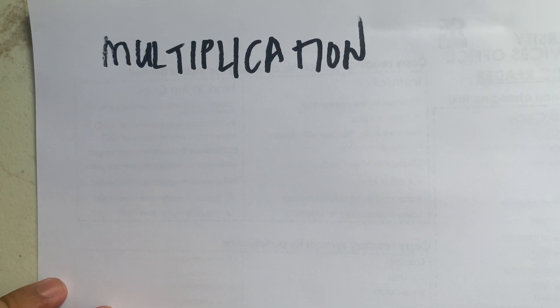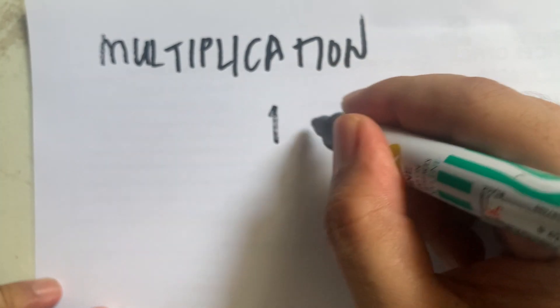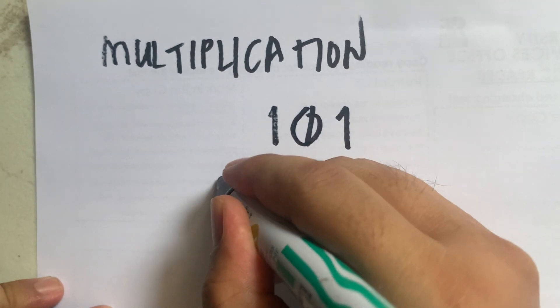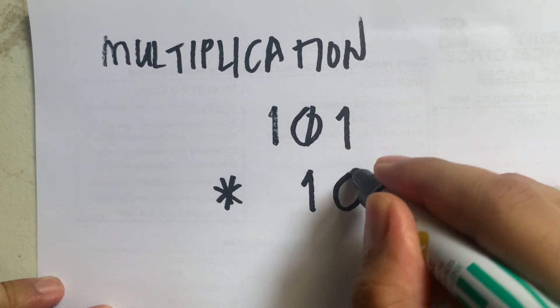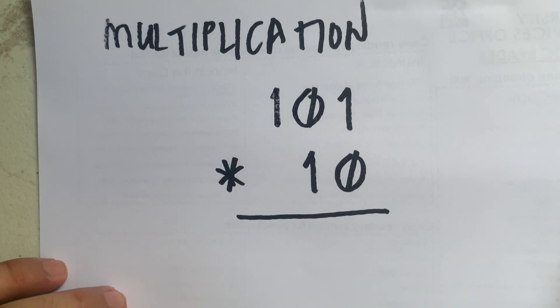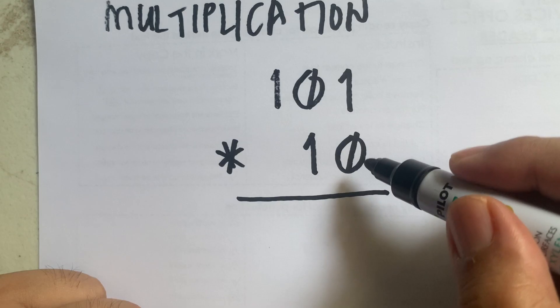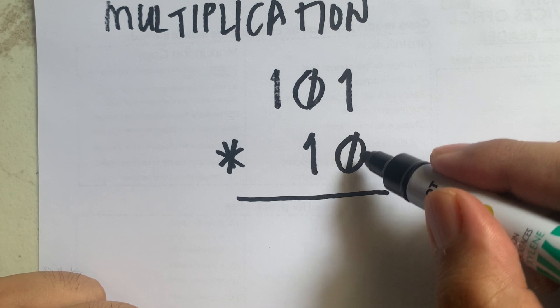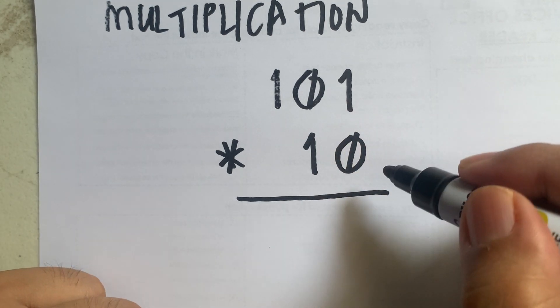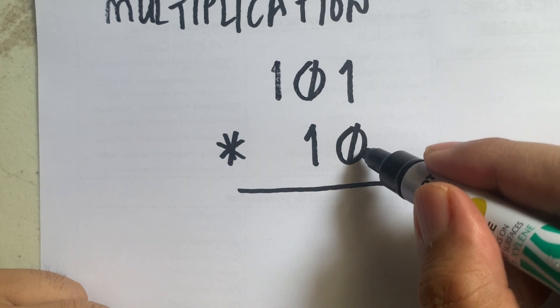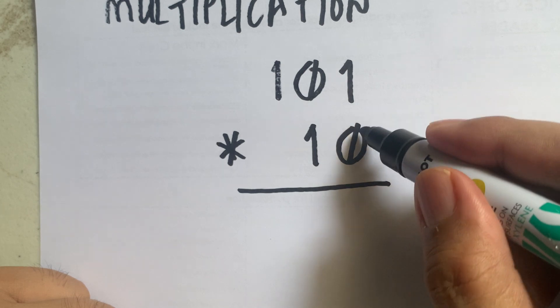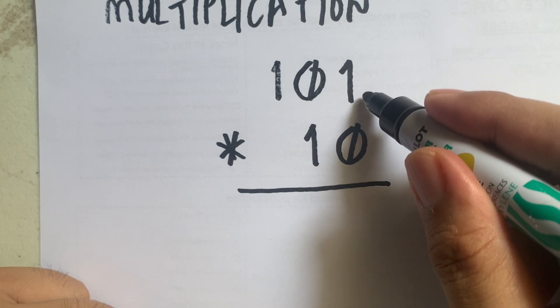In this video we will cover multiplication and division of binary numbers. Starting with binary multiplication, say you are given 101 multiplied by 10. To multiply binary numbers, just like in normal multiplication, we take the last digit of the multiplier and multiply it to the digits of the multiplicand. The rule here is: if the multiplier digit is zero, any number multiplied by zero is zero, so we just copy the number of digits in our multiplicand.